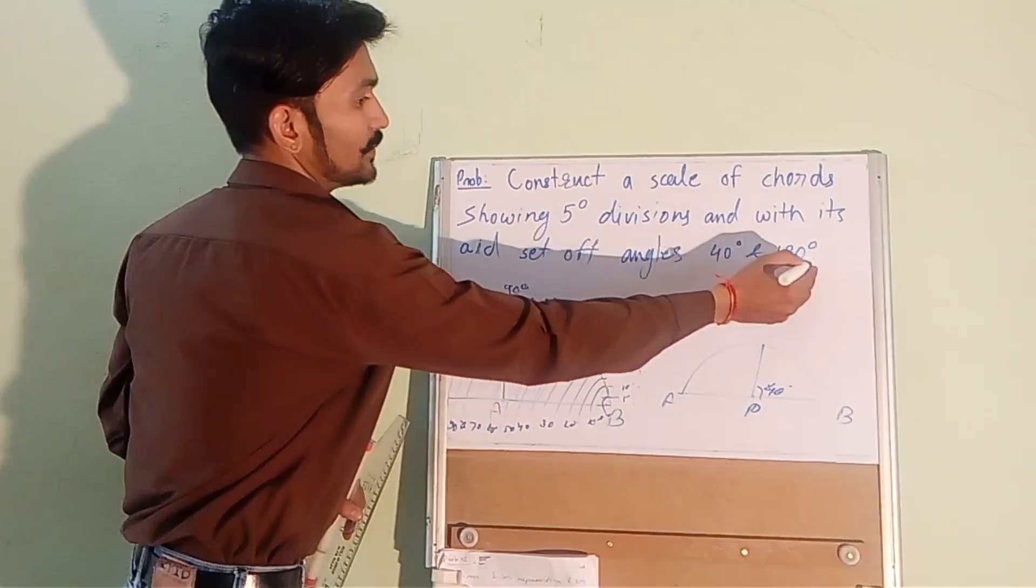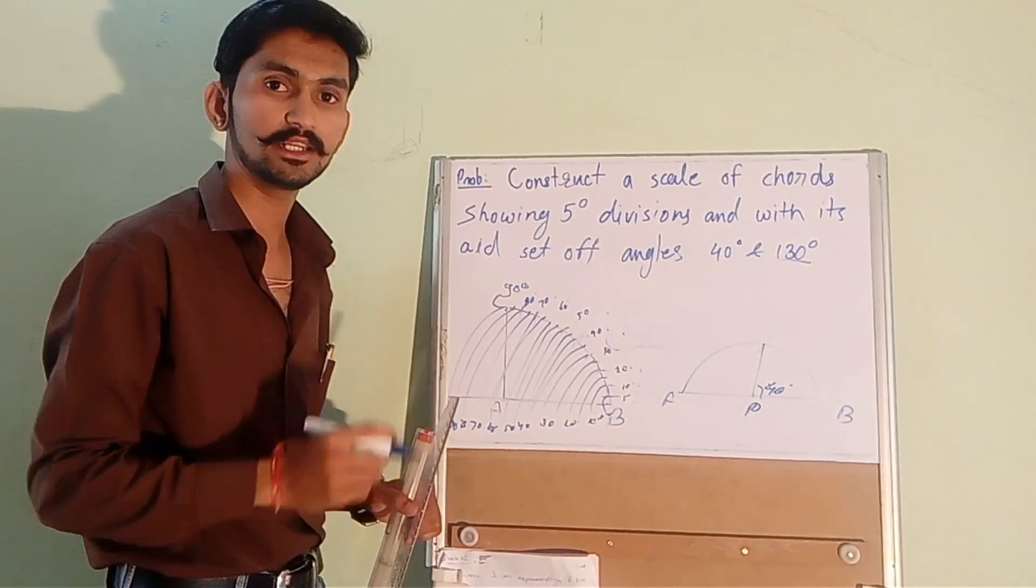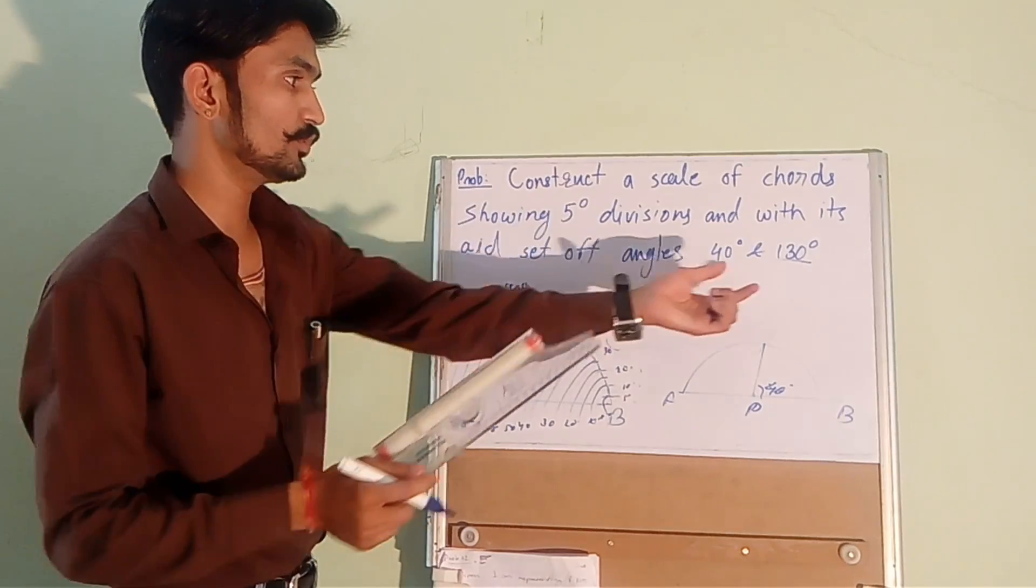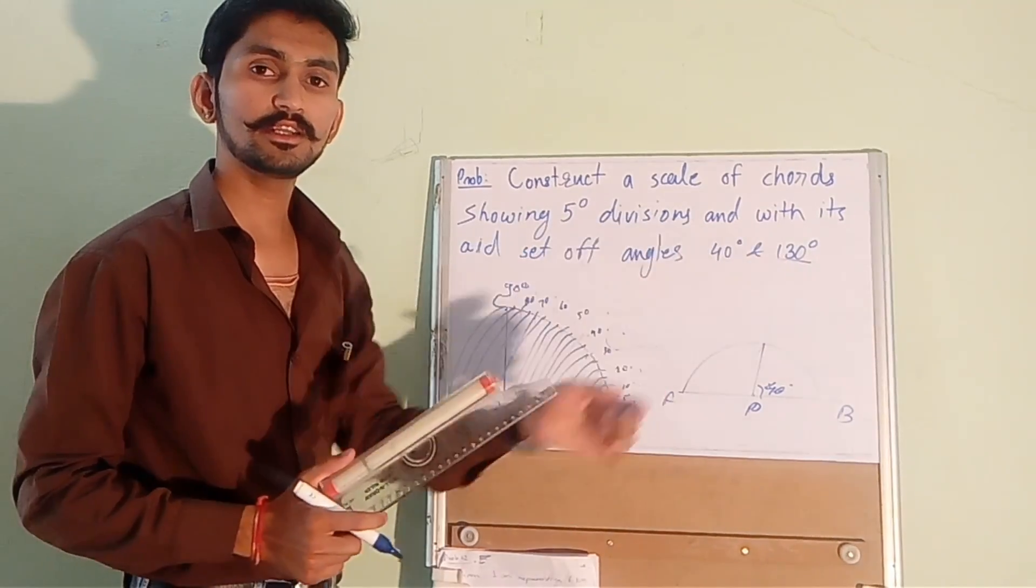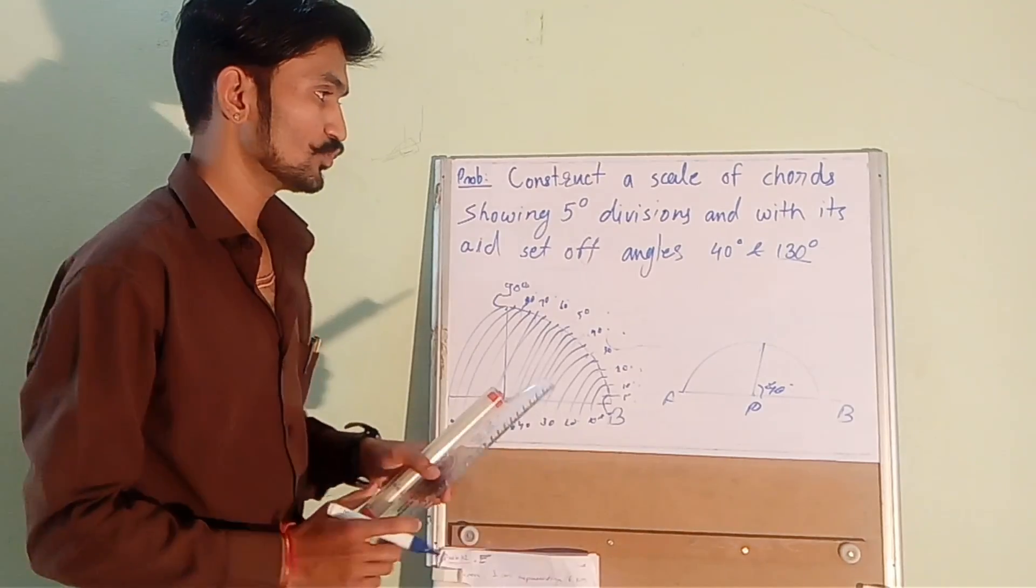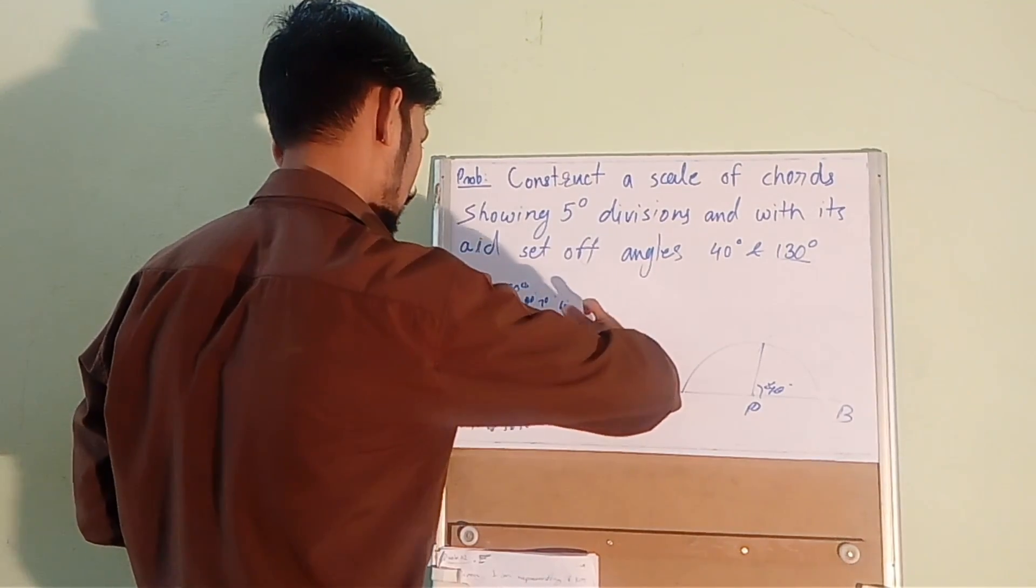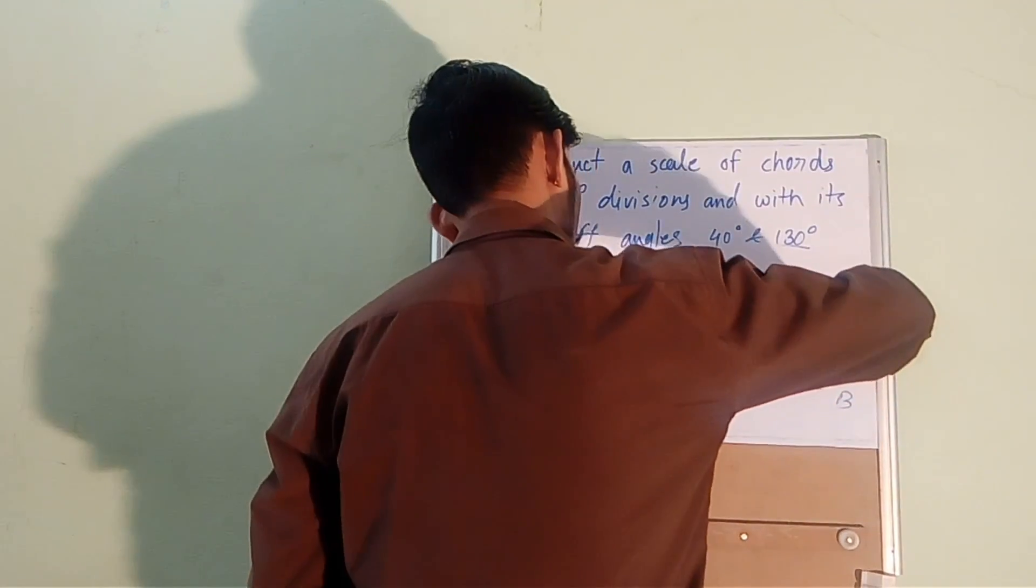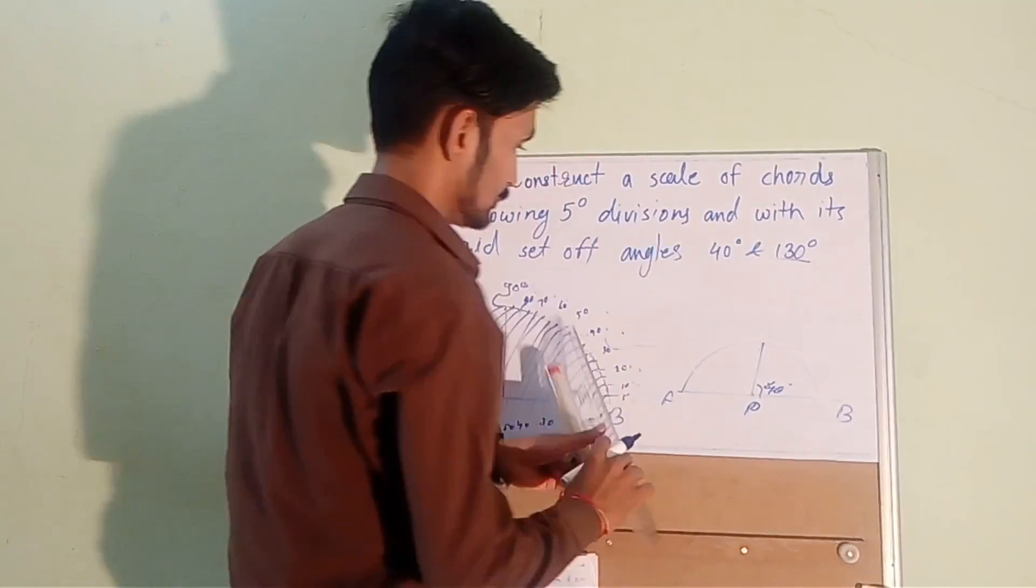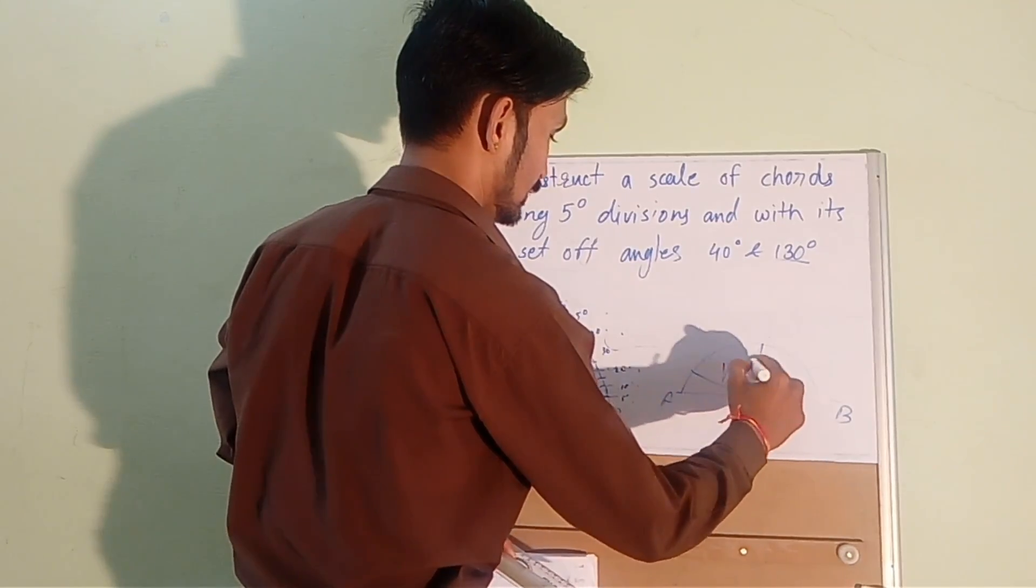Now if you want to show 130 degree, this scale of chord is showing only till 90 degree. So what you need to do is you need to break 130 degree as 65 plus 65 or 60 plus 70. So I am taking 65 plus 65. So this is 50 and 60 right. So cut a 65 here and again put it here and cut it here and join. So this is 130 degree.